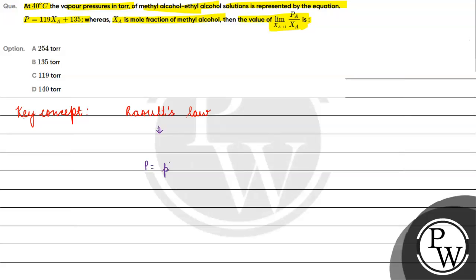So the total pressure that we have is P not A, which is the partial vapor pressure of pure component A into its mole fraction, plus P not B, which is the vapor pressure of pure component B, into chi B, the mole fraction of B.